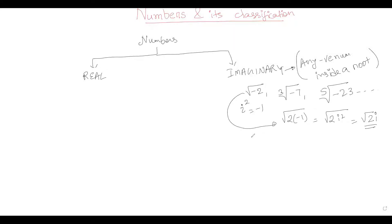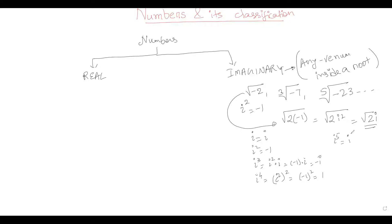It is advisable to remember the higher powers of iota. i equals i; i squared equals minus one; i cubed equals i squared times i, which is minus i; i to the power four equals i squared whole squared, which is minus one times minus one, that is plus one. i to the power five equals i4 times i, and since i4 is one, this equals i, and so on.